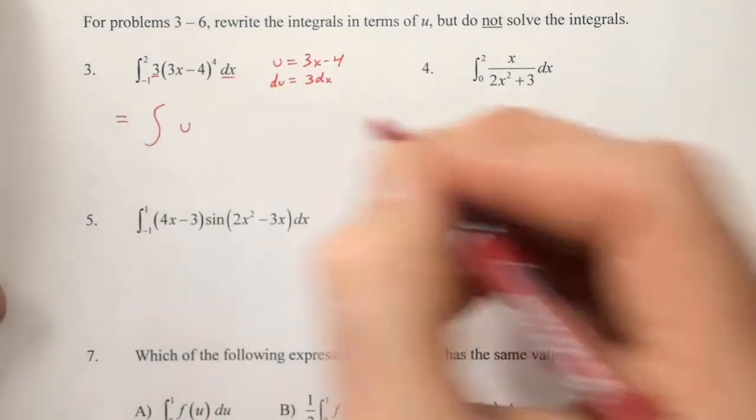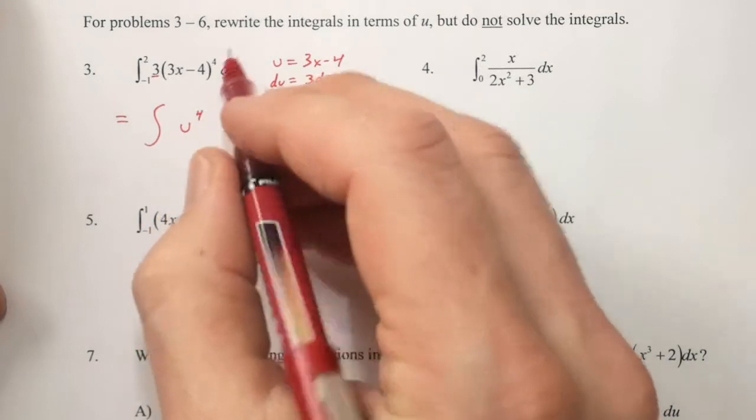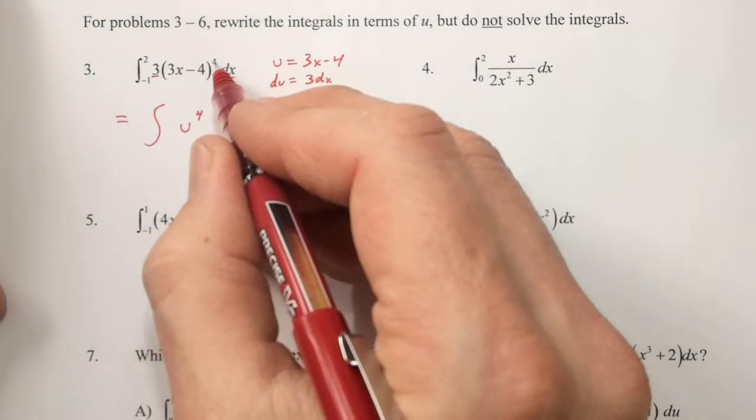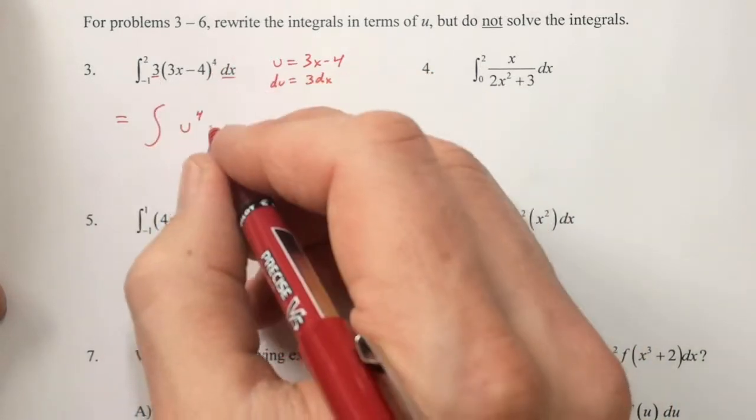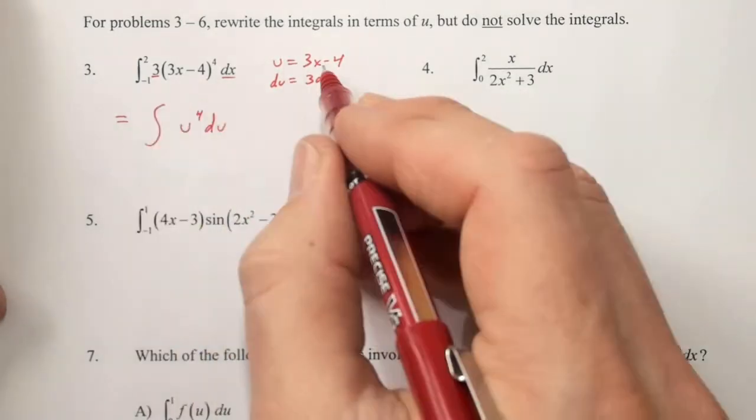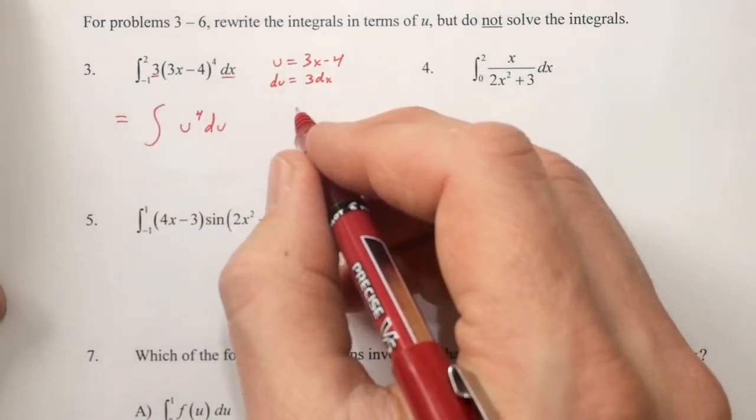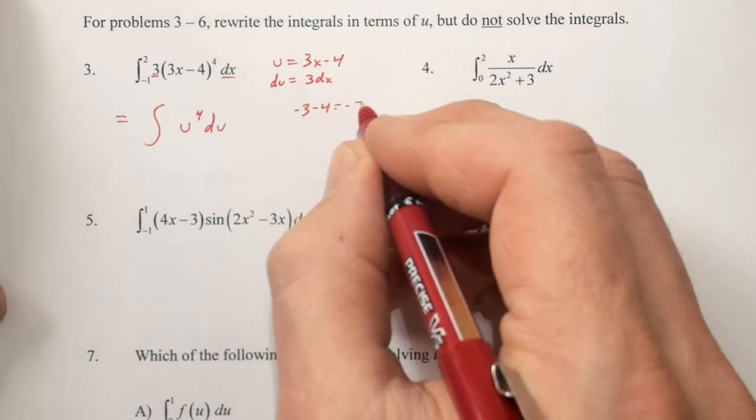3x minus 4 is replaced by u. It needs to be raised to the 4th power, just as it was before. The 3 and the dx are replaced by du. When you plug negative 1 into our equation, we have negative 3 minus 4, or negative 7.